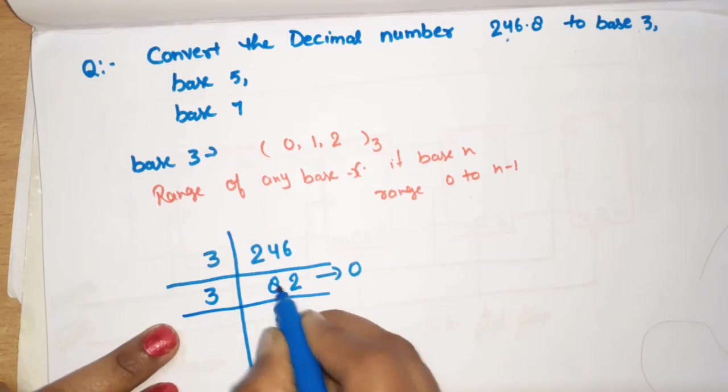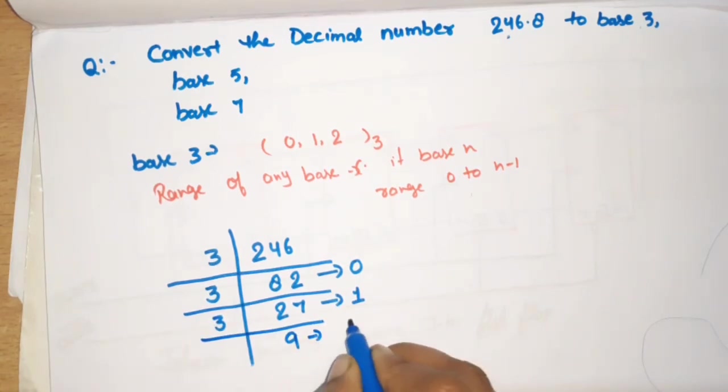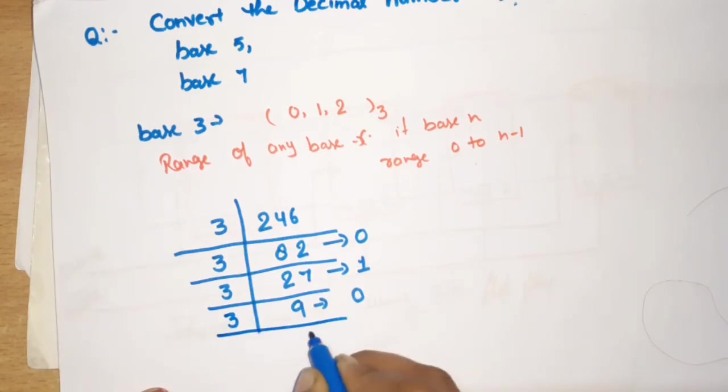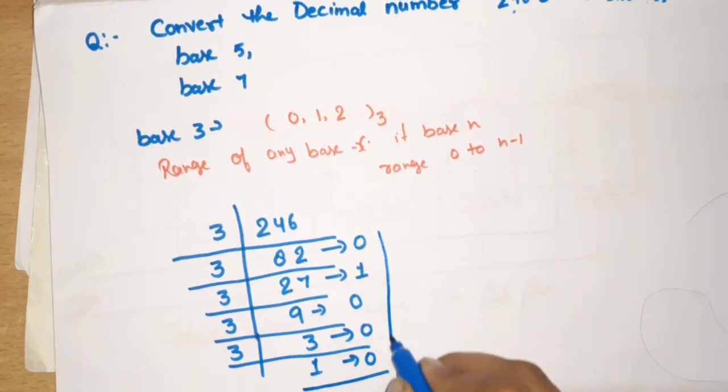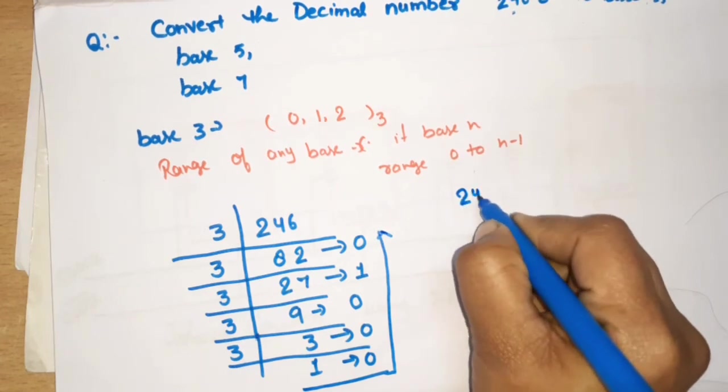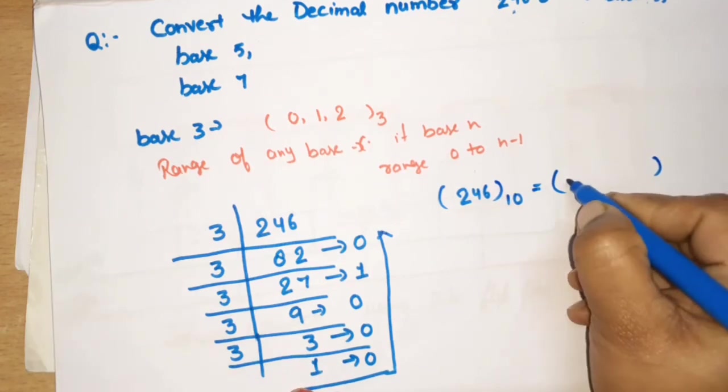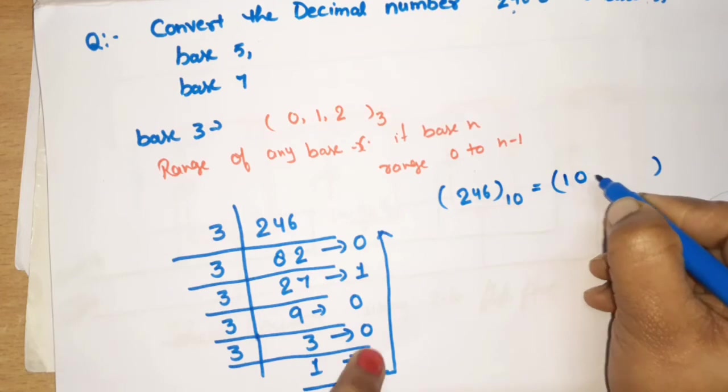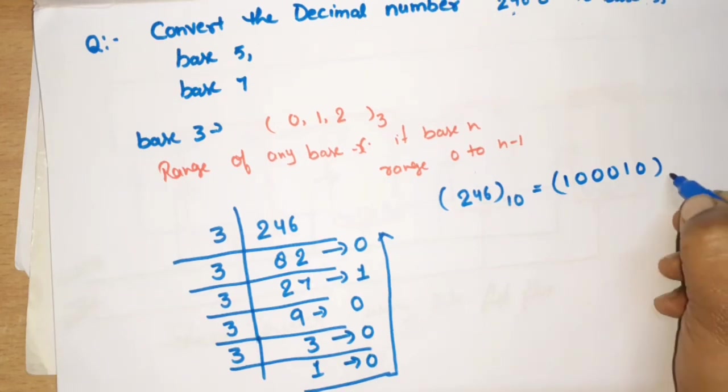3 times 2 is 6. 2 remaining. 3 times 7 is 21. What is the remainder value? 1. Now 3 divided by 9, the remainder is 0. 3 divided by 3, the remainder is 0. 3 divided by 1, the remainder is 0. Now 1 is less than 3, means that this is our conversion for 246. So 246 which was in our base 10, what will we write in base 3? 100010 in base 3.